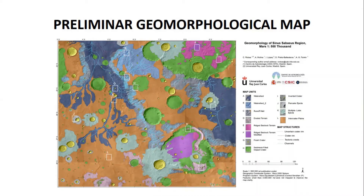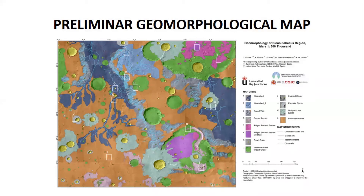The crater-related units are fresh craters, letter H, in green; inverted craters, letter I, also in green; and different ejecta morphologies, including pancake, letter J, and multi-lobe, letter K.